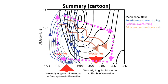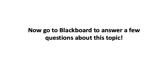This summary cartoon shows the mean zonal flow in black, the Eulerian mean overturning in blue (both the Hadley and Ferrel cells), the residual overturning which is equator-to-pole in pink, and the eddy momentum transport in orange. Being able to think about how all these are related to each other is a key accomplishment — if you can do that, you understand a lot about our general circulation and how dynamics and thermodynamics constrain the behavior of our atmosphere, and why we have westerly and easterly flow where we do. Go to Blackboard to answer a few questions about this topic.